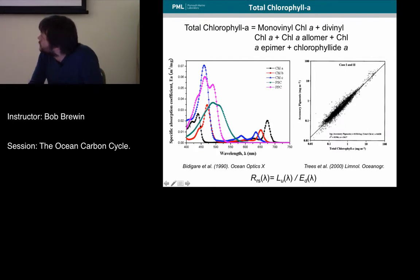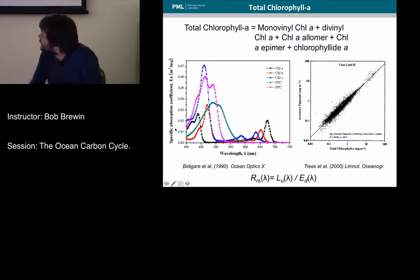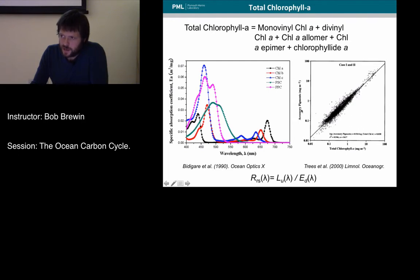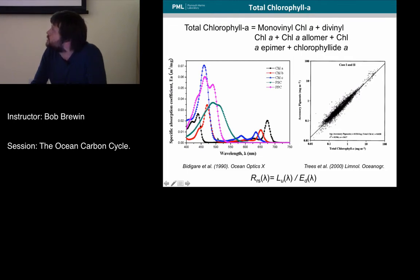In addition to total chlorophyll, phytoplankton have a series of other pigments — photosynthetic pigments and photoprotective pigments — which typically absorb in the blue and slightly green wavelengths. These accessory pigments typically co-vary very strongly with total chlorophyll, so as total chlorophyll concentration increases there's more and more absorption in the blue region, and relatively little absorption in the green part of the spectrum.